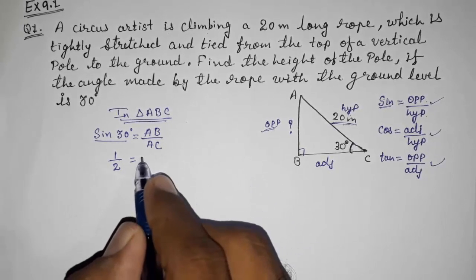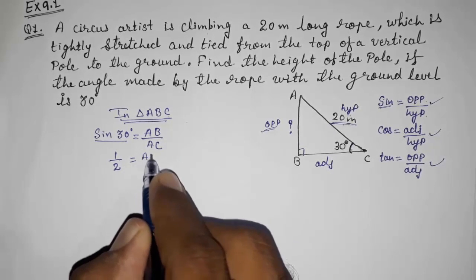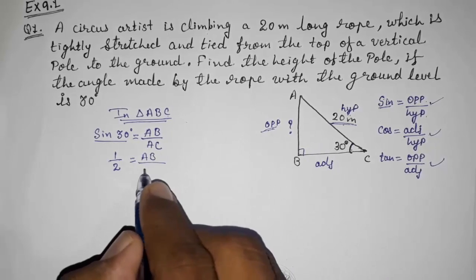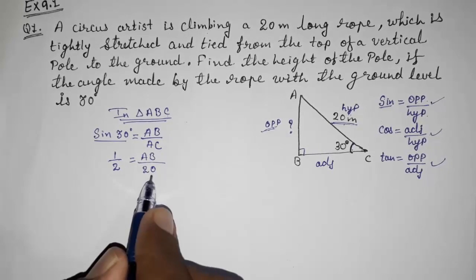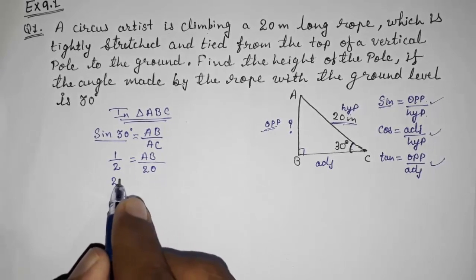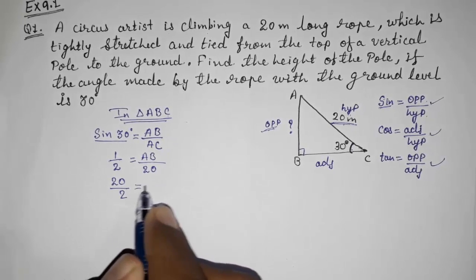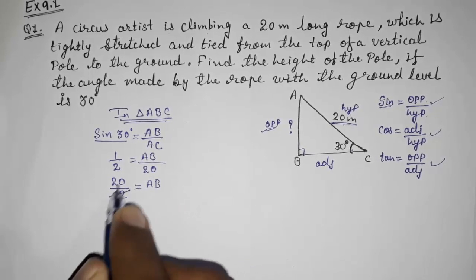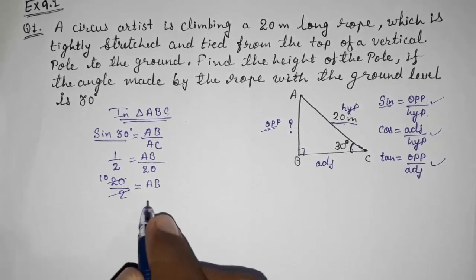And now AB, that we want to find out, and AC we are having, that is 20. So now take this 20 here. 20 by 2 is equal to AB, so directly we will cancel this and get 10.